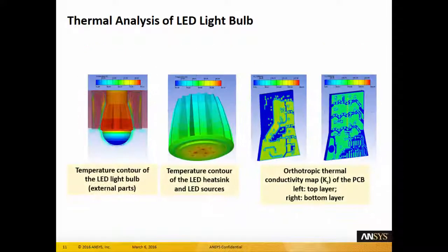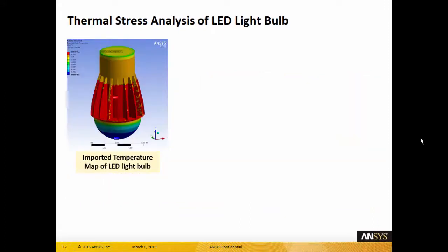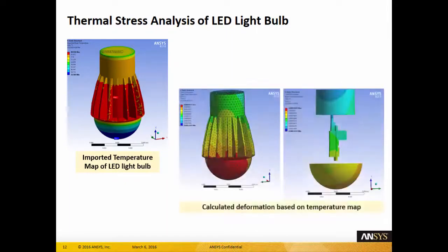A thermal analysis is conducted to optimize the temperature performance of the LED light bulb. The temperatures of all parts of the LED light bulb are used in the stress analysis to predict the deformation of these parts. Multi-physics optimization can be performed to ensure that the deformations caused by the rise in temperature are within design tolerances.